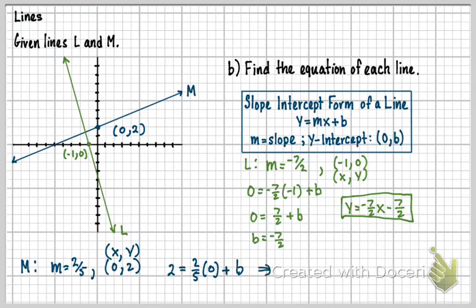So now, when I work this out, 0 times 2 fifths is 0. So I get 2 equals b. It's actually pretty quick.